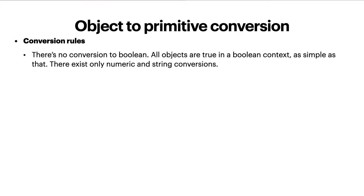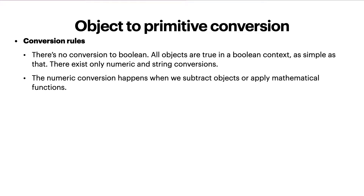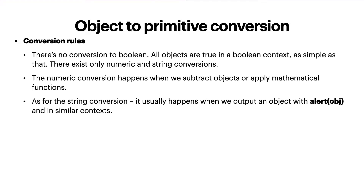There is no boolean conversion for objects — all objects are true in a boolean context, as simple as that. There exist only numeric and string conversions. The numeric conversion happens when we subtract objects or apply mathematical functions — for instance, objects can be subtracted and the result of subtracting two date objects is the time difference between them. As for string conversion, it usually happens when we output an object with alert and similar contexts. We can implement string and numeric conversion by ourselves using special object methods.